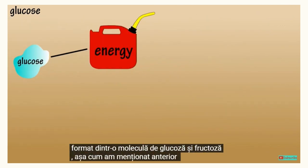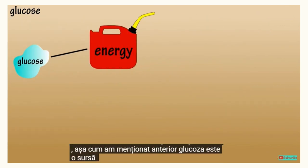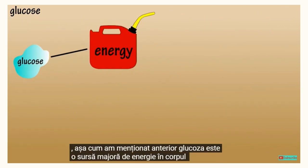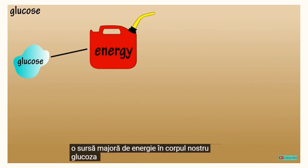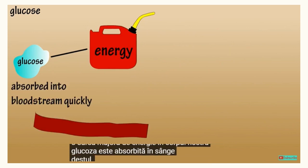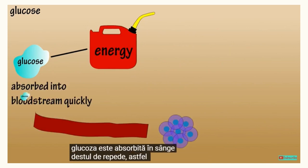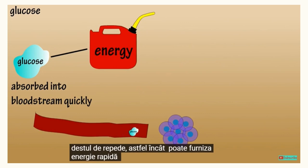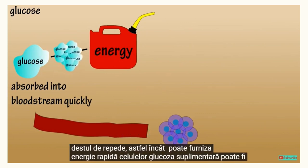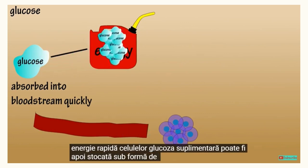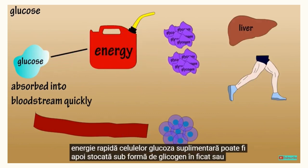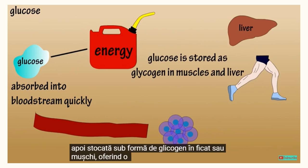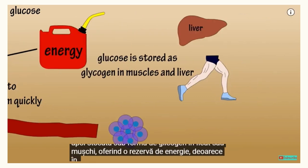As mentioned before, glucose is a major source of energy in our bodies. Glucose is absorbed into the bloodstream rather quickly, so it can provide quick energy to cells. Extra glucose can then get stored as glycogen in the liver or muscles, providing an energy reserve.